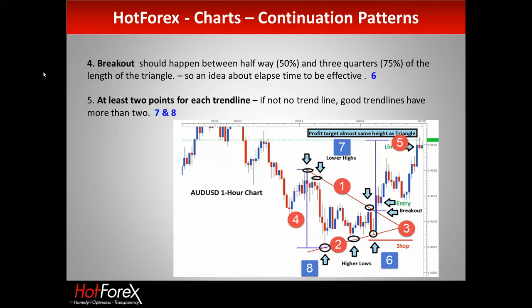The fourth key rule is the breakout. The breakout should happen anywhere between halfway and three-quarters — 50% to 75% — of the length of the triangle. Once you've identified the triangle you have some idea of how long it's likely to last. If the price action gets into the apex without breaking out significantly, it's over. You need at least two points to create a trend line — ideally three or four touches.